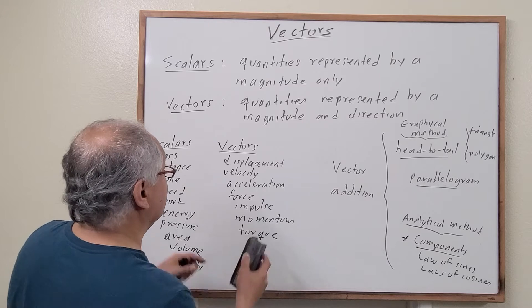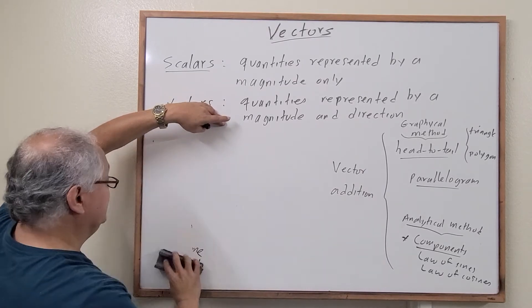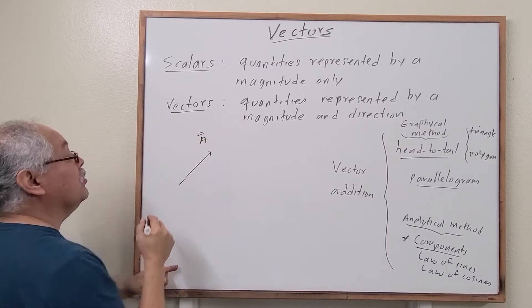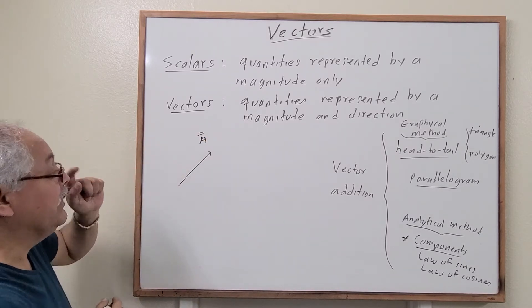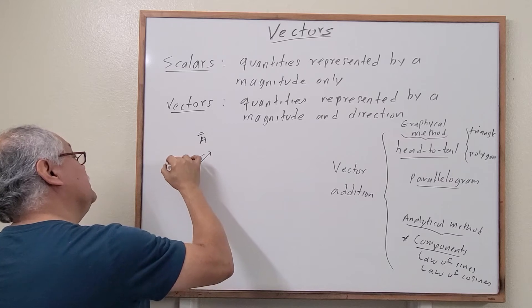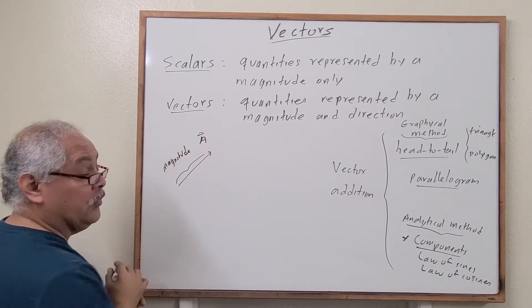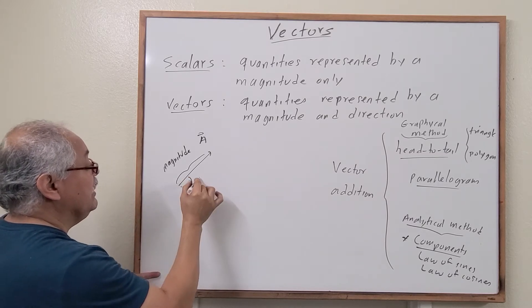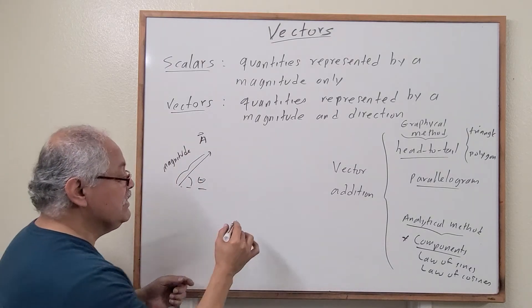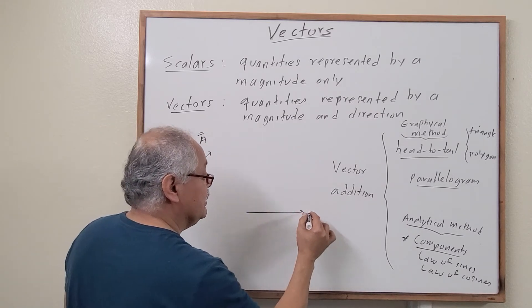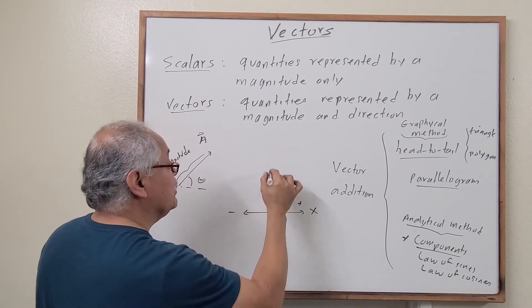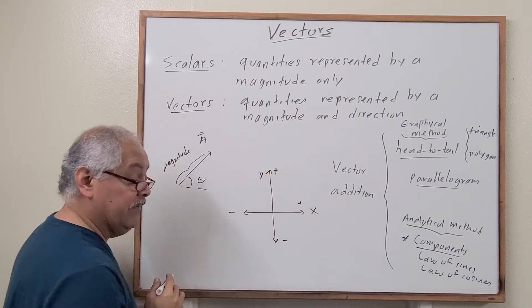How do we represent a vector? A vector is represented by an arrow, and also by a letter with an arrow on top. The length of the arrow is proportional to the magnitude. The angle represents the direction when we are in 2D. In 1D, in the x-direction, right is positive and left is negative. In the y-direction, up is positive and down is negative — that's the convention.